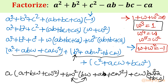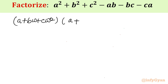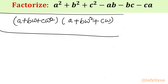All three brackets are (a plus b omega plus c omega square). Taking this as common factor, what remains overall is (a plus b omega plus c omega square) times (a plus b omega square plus c omega). This is our final result after factorization.